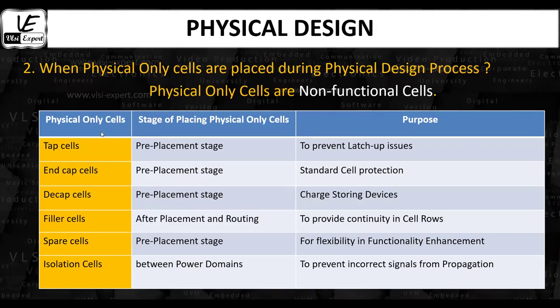Filler cells are inserted by the place and route tool to fill the gaps in the layout after placement and routing is completed. Filler cell insertion must be completed before physical verification can begin. The purpose of filler cells is to provide continuity in the rows for the VDD and VSS nets for stable operation of the standard cells.